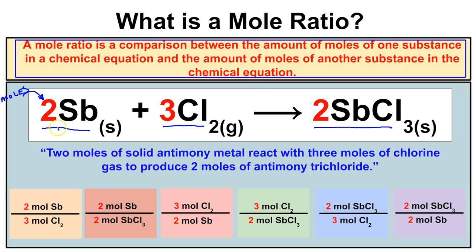If we have a balanced chemical equation, we can develop all kinds of different mole ratios from it. In fact, there are six different mole ratios we can compare from this one equation. For example: 2 moles of antimony for every 3 moles of chlorine; 2 moles of antimony for every 2 moles of SbCl3; 3 moles of chlorine to every 2 moles of antimony; 3 moles of chlorine to 2 moles of SbCl3; 2 moles of antimony to 3 moles of Cl2; and 2 moles of SbCl3 for every 2 moles of Sb.